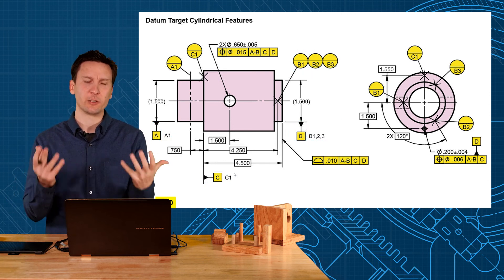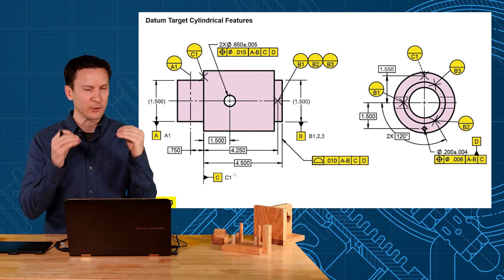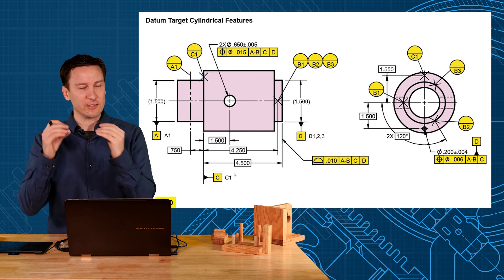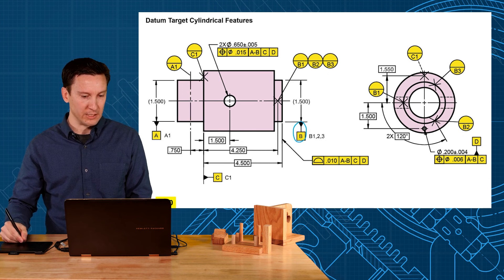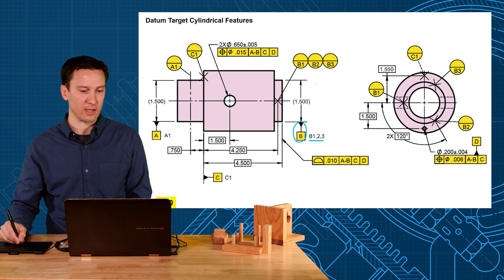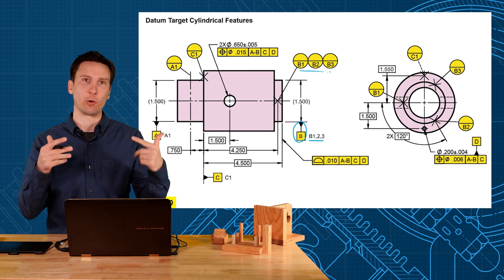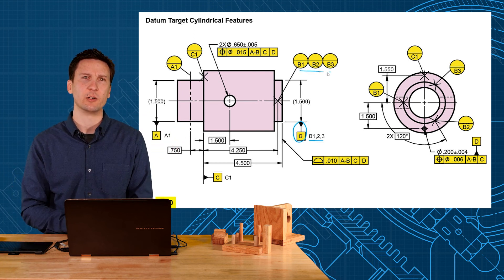So I think this was a good addition because when I first look at a drawing, I look for datum feature symbols, and the datum targets don't automatically go to my eyes. So I like this. This is, oh, B is this cylinder. Oh, but not the entire thing. It's just three targets, and then I find where the targets are to get a better grip on where that datum reference frame is. Good addition, I think.